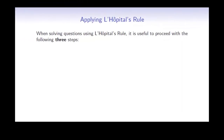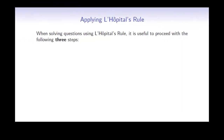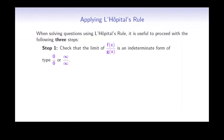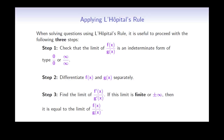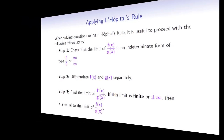When solving questions using L'Hôpital's rule, it's useful to follow three steps. First, check that the limit you're working with is an indeterminate form of the type zero over zero or infinity over infinity. If it is, then differentiate f(x) and g(x) separately. That will give you a new limit, f'(x) divided by g'(x). Try to evaluate this limit, and if the answer is finite or plus or minus infinity, then this is also the answer to the original limit.